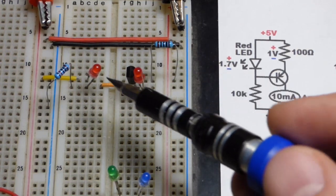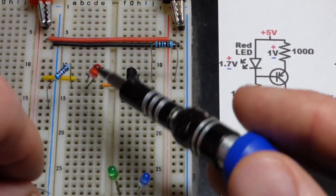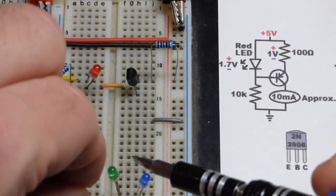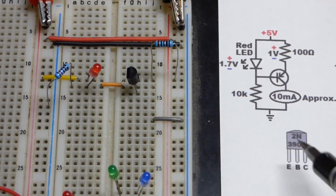So the current wants to go there, has an easier path through that 10K resistor. And thus, there's no reason for current to flow through that LED. It's dropping too much voltage.